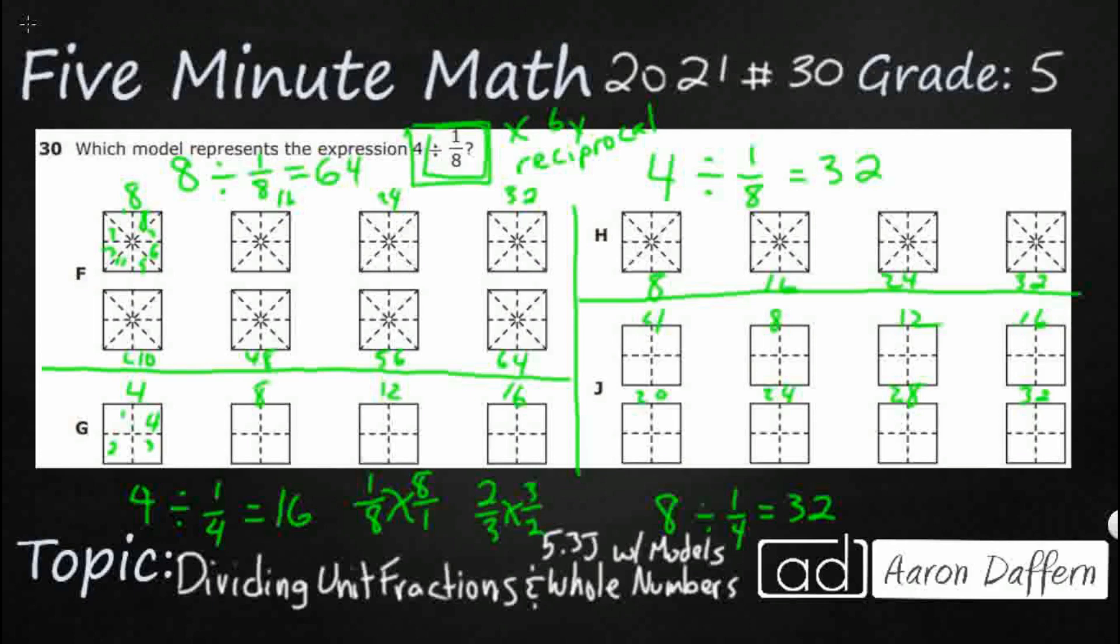So, what we do here is, let's take our answer here. 4 divided by 1/8. Instead of dividing by 1/8, we're going to multiply it by the reciprocal. So, it's going to be 4 times 8 over 1. And 8 over 1 really is just the same as 8 wholes. And that's why it's 4 times 8 equals 32.